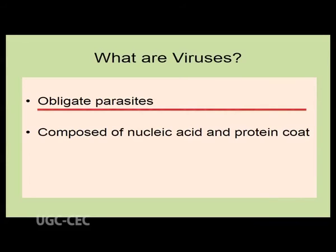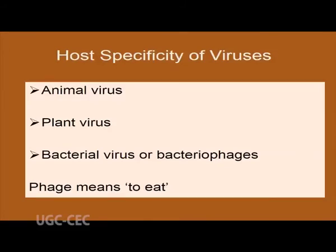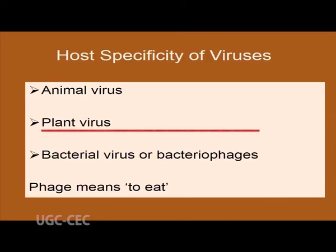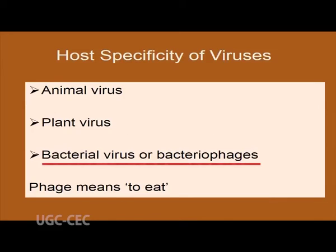Viruses are obligate parasites — they are living inside the host cell but non-living when outside the host cell, and viruses are very specific about their hosts. Some viruses attack animal cells and are called animal viruses, some attack plant cells and are called plant viruses, and some attack bacterial cells and are called bacterial viruses, also called bacteriophages, because 'phage' means to eat.